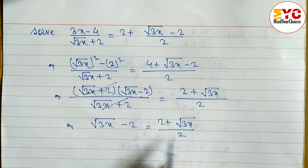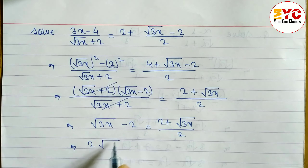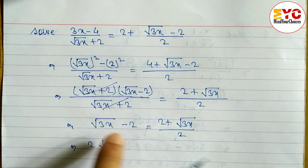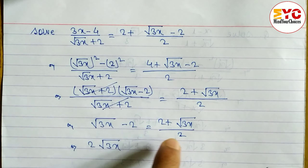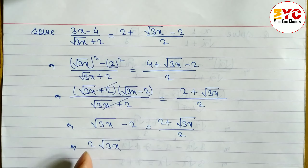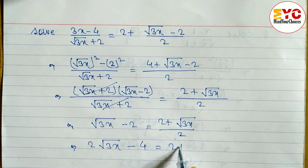We cross multiply: 2 into √(3x) gives 2√(3x). We cannot multiply √(3x) by 2 directly to get 6 because one element is under a root and the other is not. So we write 2√(3x) minus 2 times 2, which is 4, equals 2 plus √(3x).